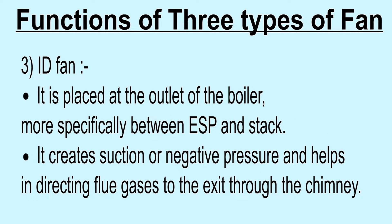The third type is the ID Fan, which is placed at the outlet of the boiler — more specifically between the ESP and the stack. It creates suction or negative pressure and helps in directing flue gases to the exit through the chimney.